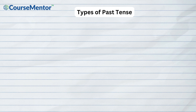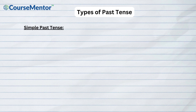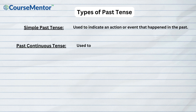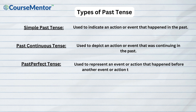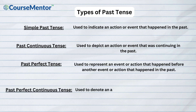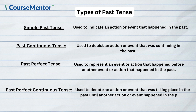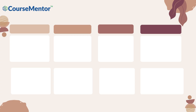Types of past tense: the past tense has four different forms to indicate the varied nature of actions that happened in the past. They are: simple past tense, used to indicate an action or event that happened in the past; past continuous tense, used to depict an action or event that was continuing in the past; past perfect tense, used to represent an event or action that happened before another event or action that happened in the past; and past perfect continuous tense, used to denote an action or event that was taking place in the past until another action or event happened.